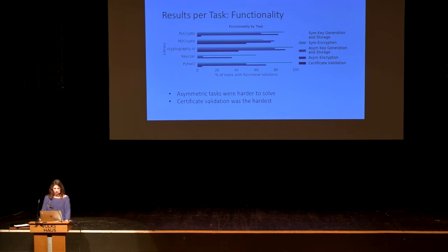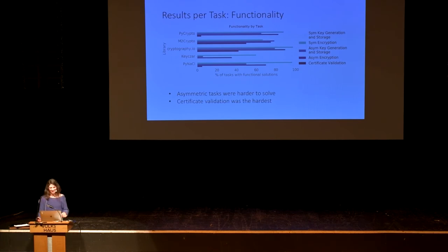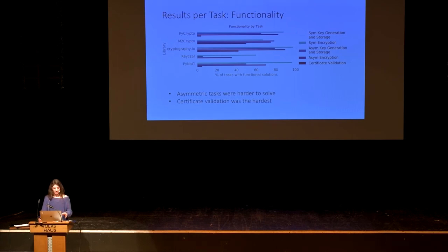Looking at functionality results split by task, we can see they varied widely — both by task and by the API people were restricted to. Symmetric key generation and storage had the highest success, moving down to certificate validation, which had the smallest bar. For most APIs, asymmetric tasks were the hardest to solve, and certificate validation was the hardest among all.